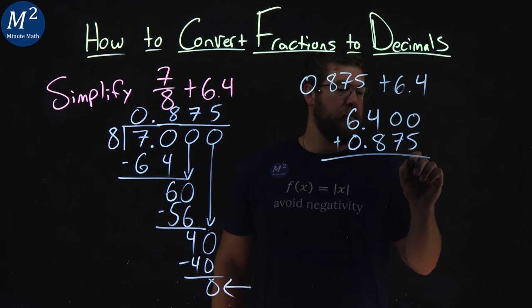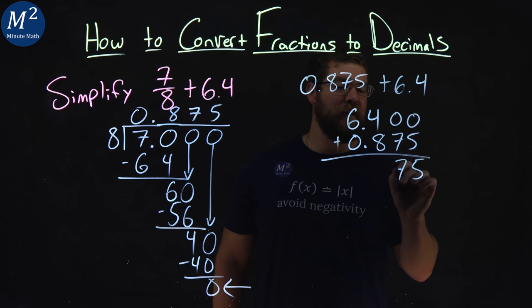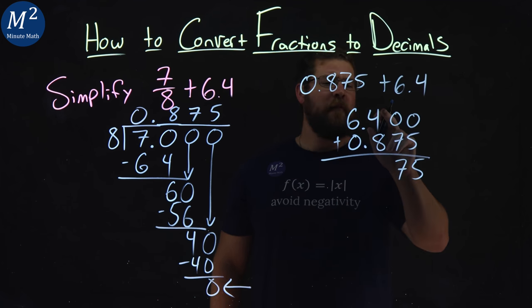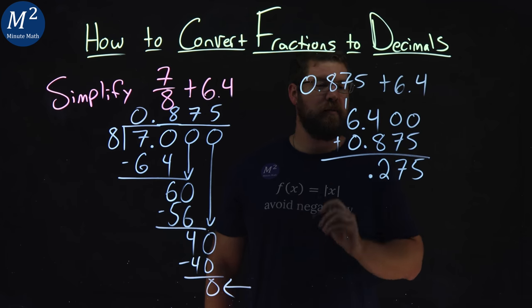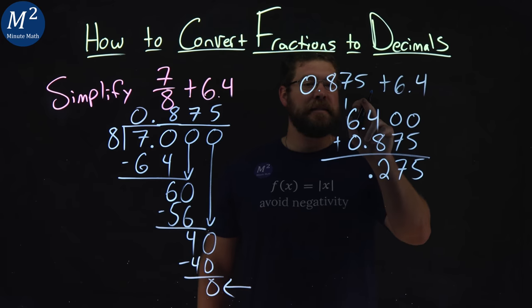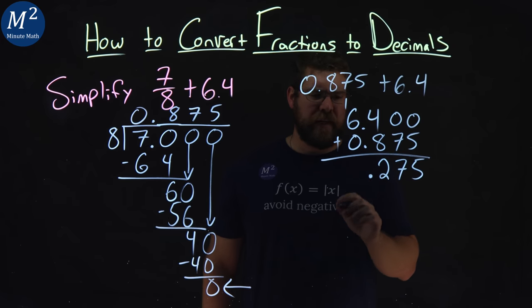0 plus 5 is 5. 0 plus 7 is 7. Good to go there. 4 plus 8 is 12. 2, we carry the 1. Decimal place stays right there. And then 1 plus 6 is 7 plus 0 stays a 7.